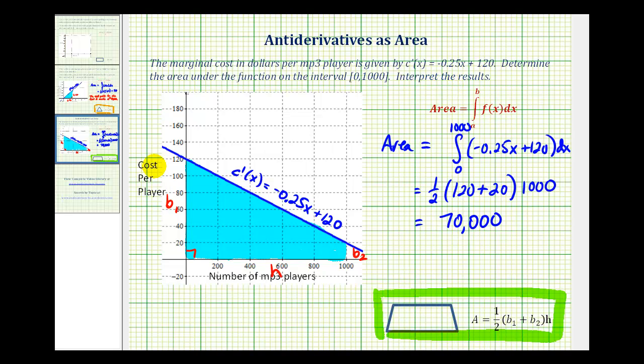But to interpret the meaning of this, notice how we're multiplying the cost per MP3 player by the number of MP3 players. So this 70,000 actually represents the total cost of producing 1,000 MP3 players.